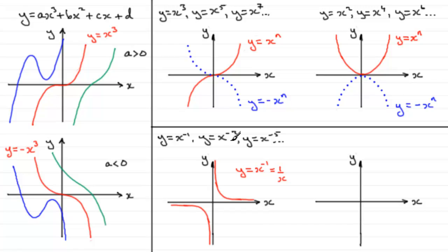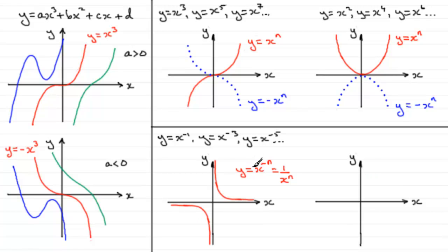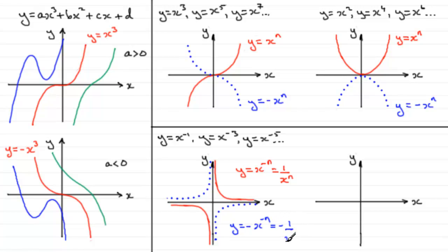Now if we draw the graph of y equals x to the power minus 3, which is 1 over x cubed, it's going to be very similar in shape. And x to the power minus 5 would again look very similar. In general, any graph of the form y equals x to the power minus n, where the power is a negative odd integer, is going to look like this kind of shape. And if we put negatives in front of these, we get a reflection in the x-axis, giving y equals minus x to the power minus n, or minus 1 over x to the power n.